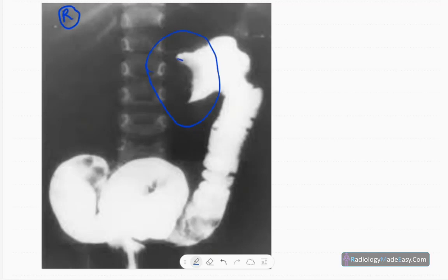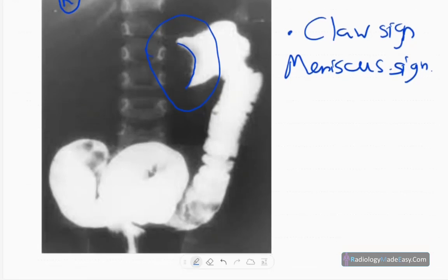You call this the claw sign or meniscus sign. The meniscus sign and claw appearance are there. You don't see the proximal bowel loops in this region, so the ascending and proximal transverse colon are not visualized.